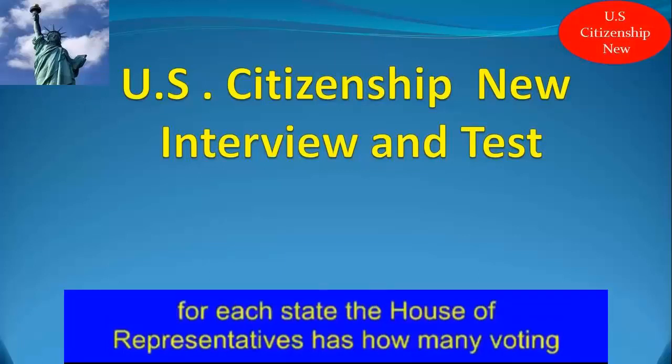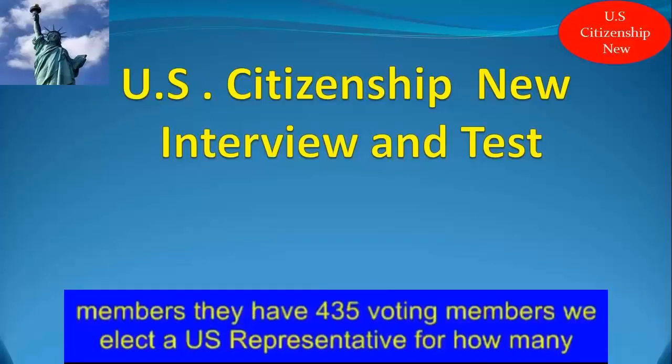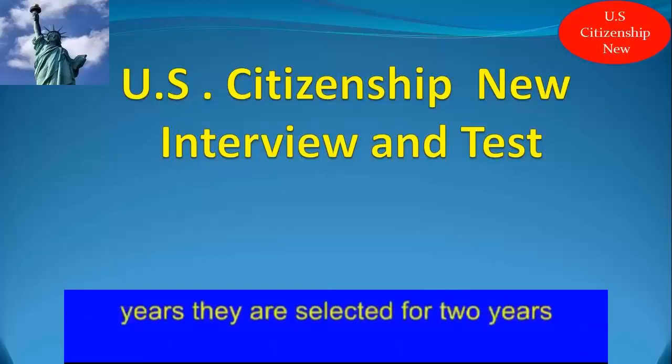The House of Representatives has how many voting members? They have 435 voting members. We elect a U.S. Representative for how many years? They are selected for two years.